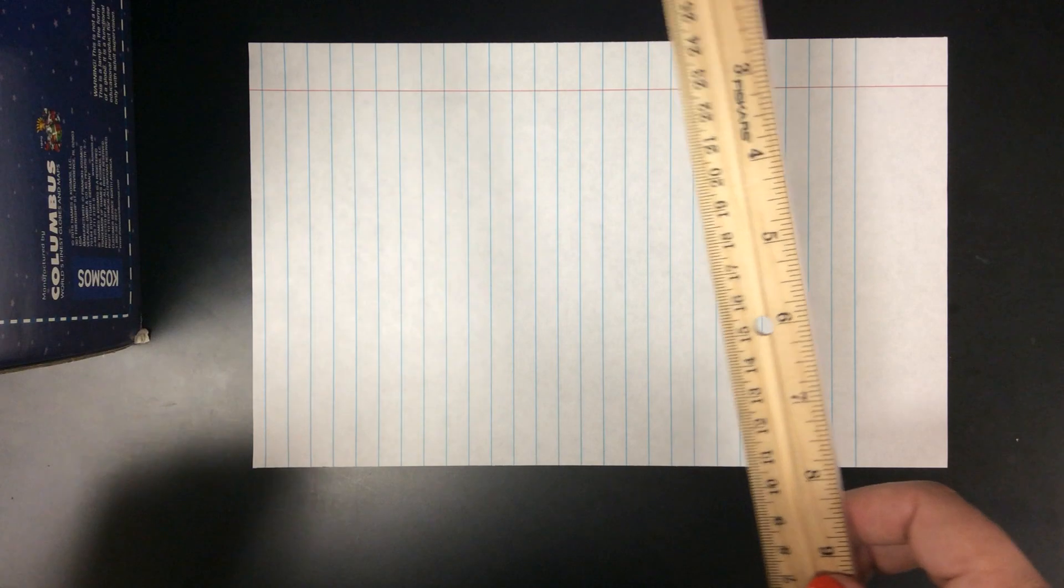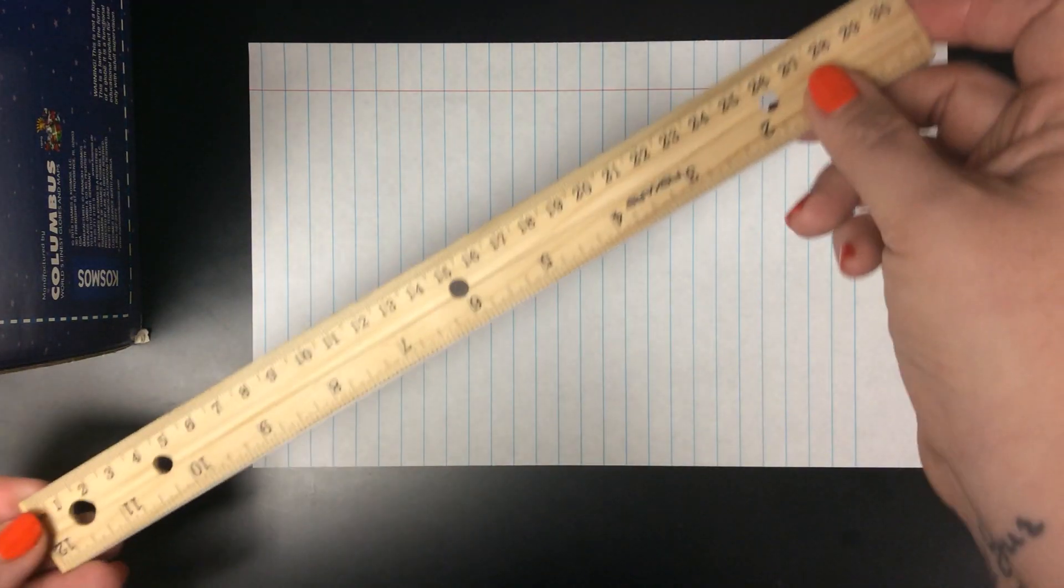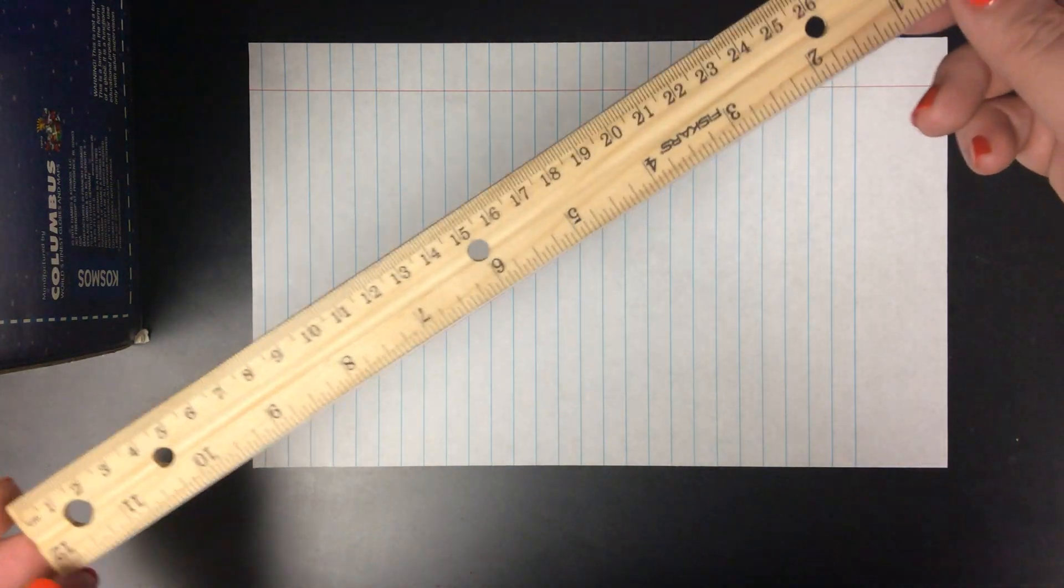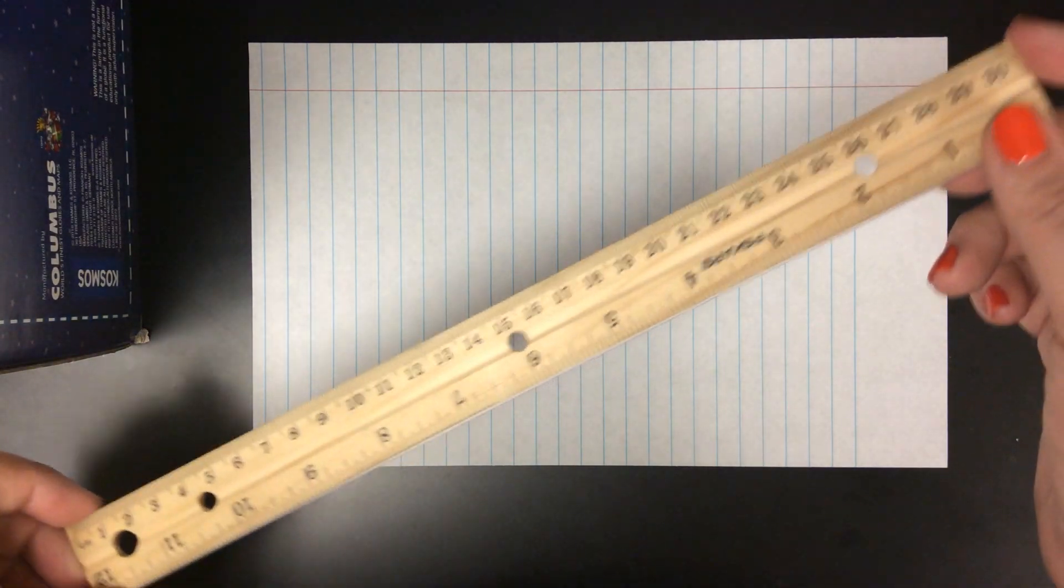If you have a ruler handy, you need a ruler. If you don't have a ruler, you definitely need a straight edge of some kind.